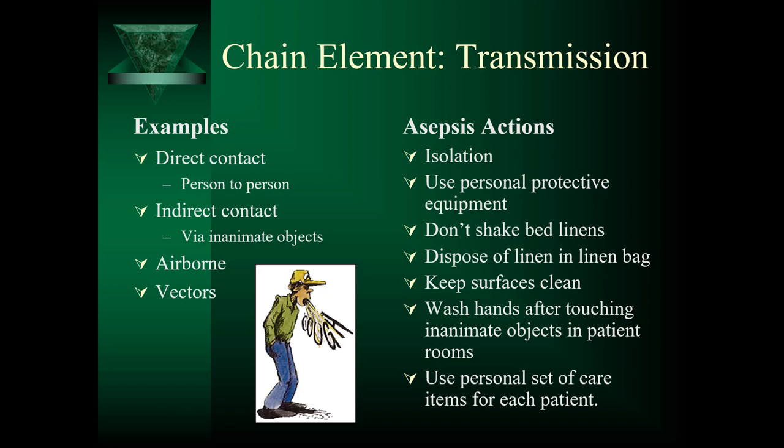Spread of airborne droplets is also a form of direct contact, but only if the host is within three feet of the reservoir. Sneezing, coughing, spitting, talking, or even singing can transmit droplets into the eyes, nose, or mouth of the new host. If airborne droplets are further away than three feet, it's considered indirect transmission. Vectors are non-human carriers that transmit organisms from one host to another — ticks, mosquitoes, and lice are good examples.